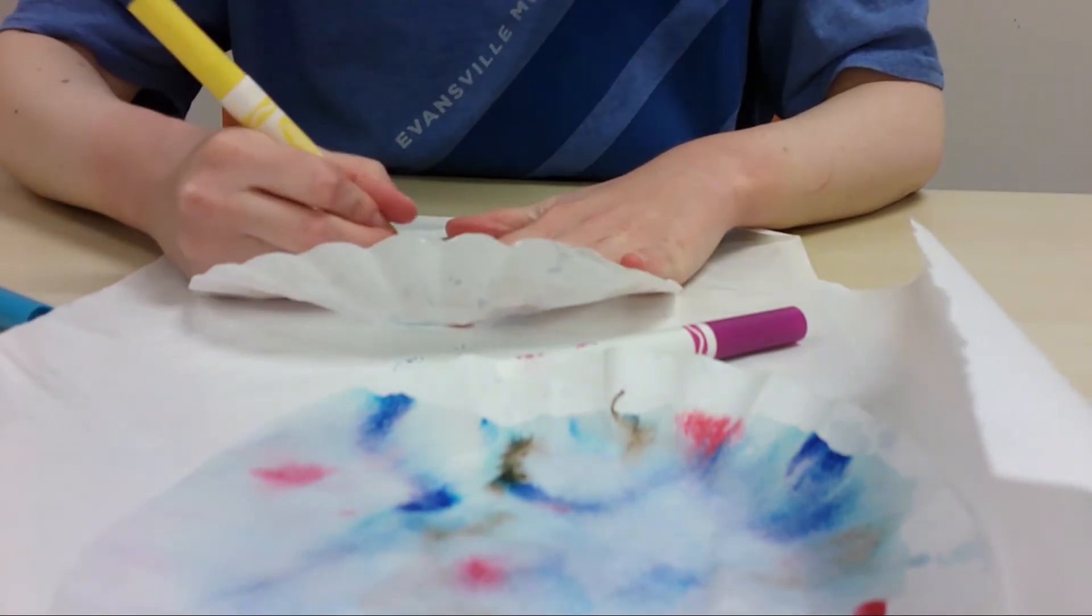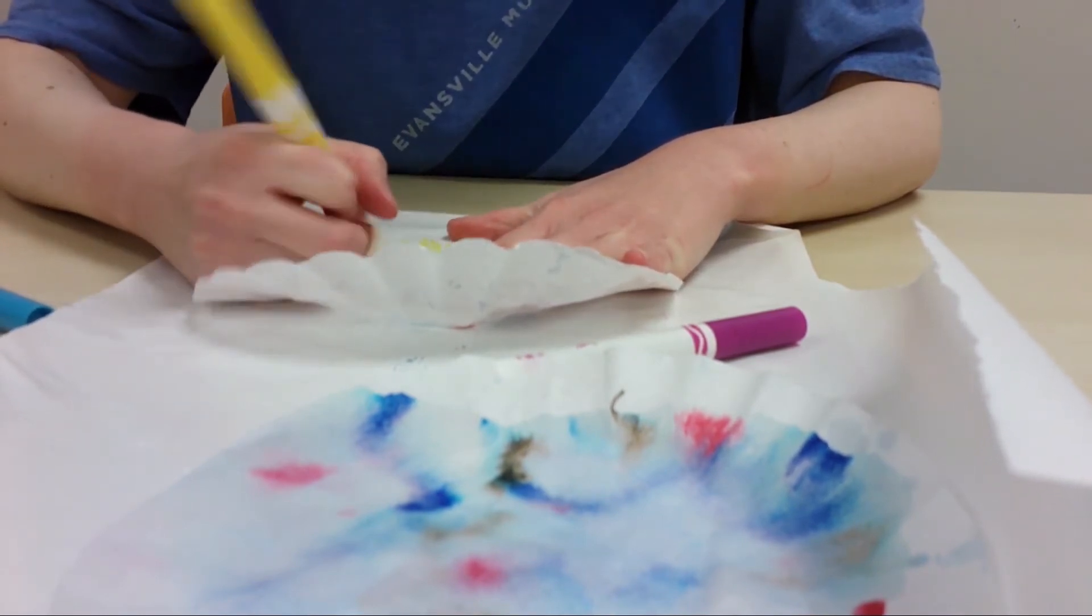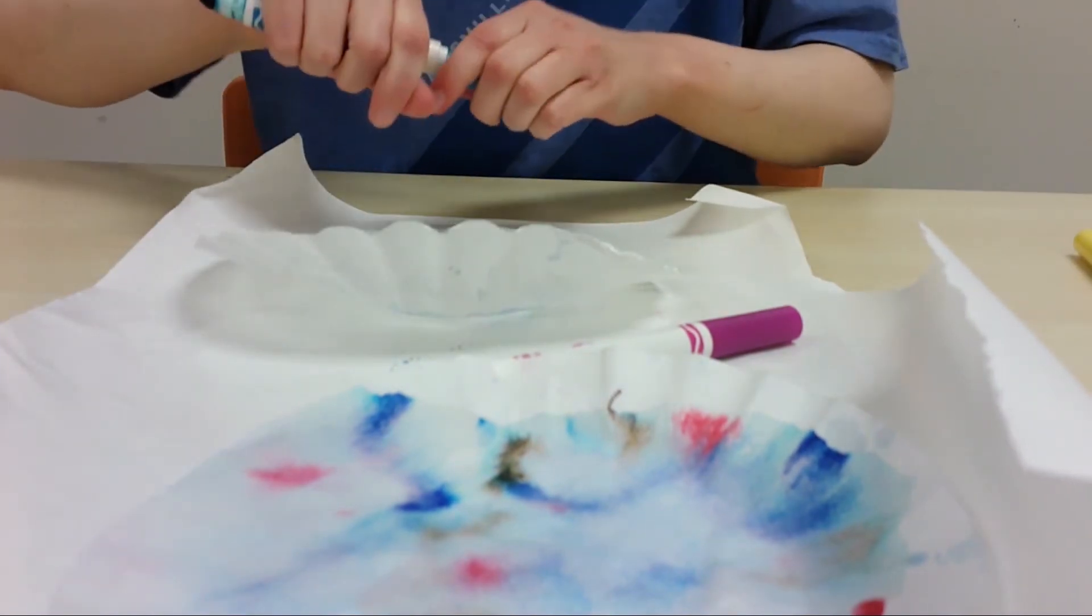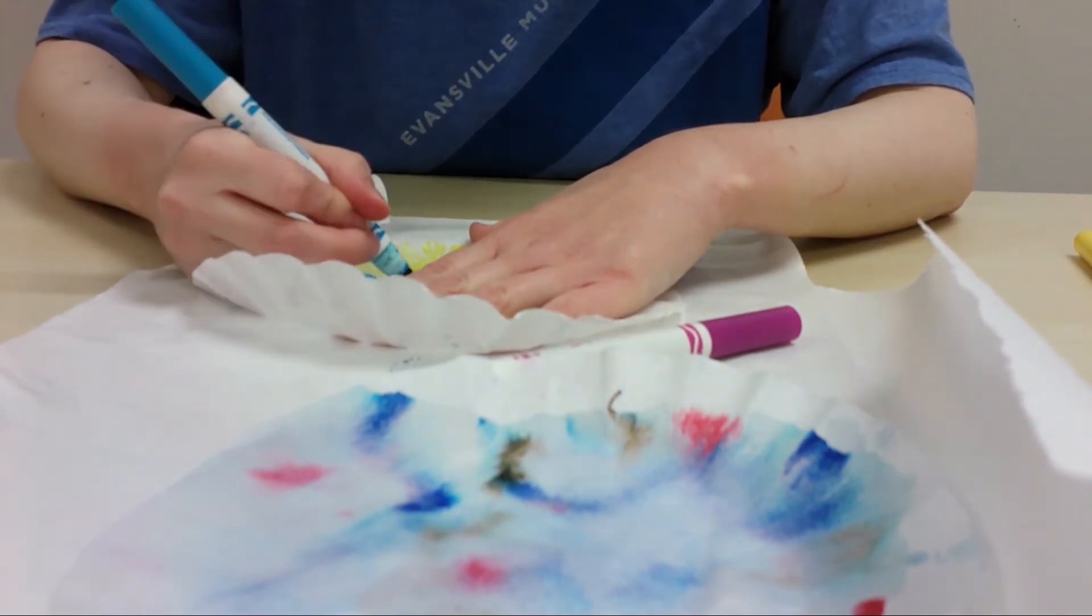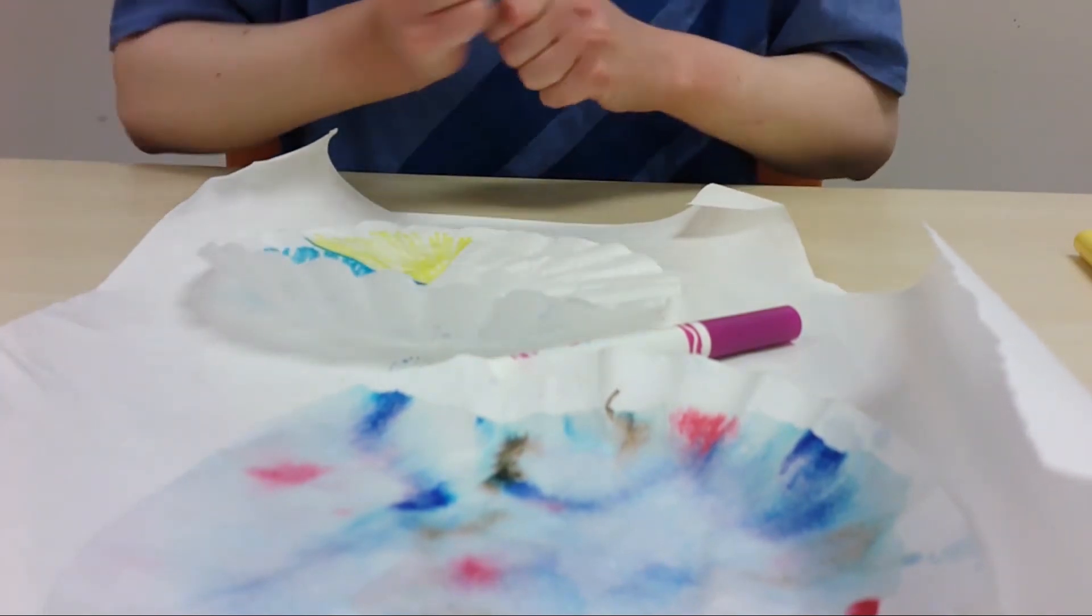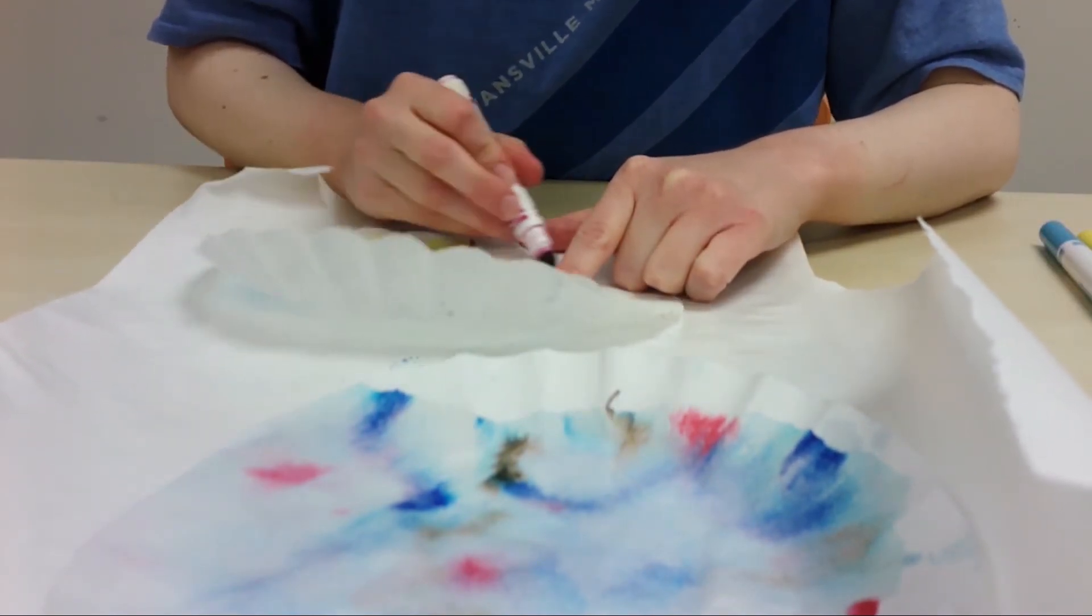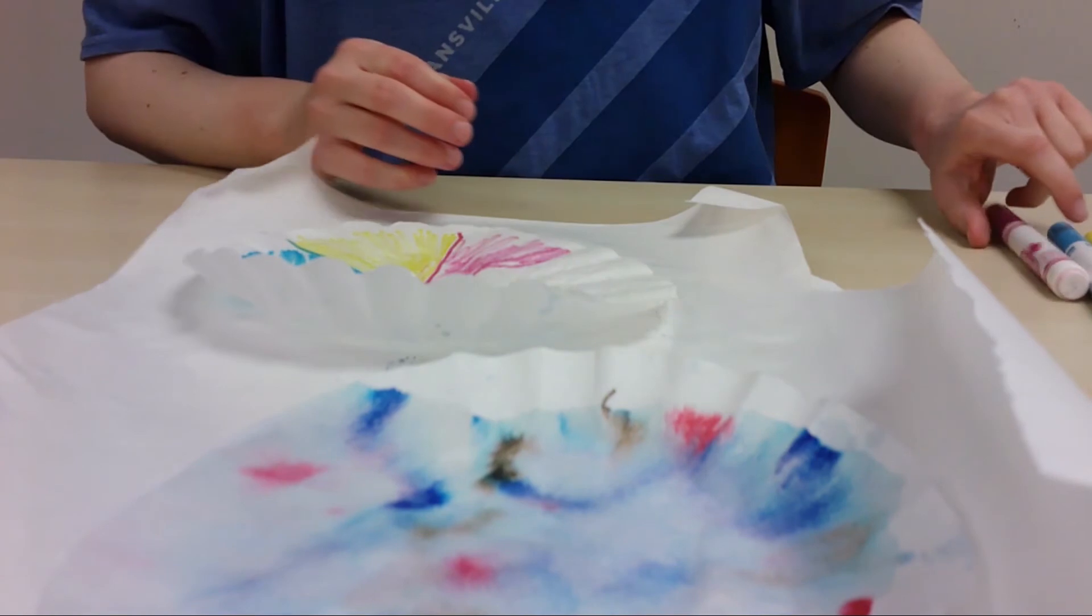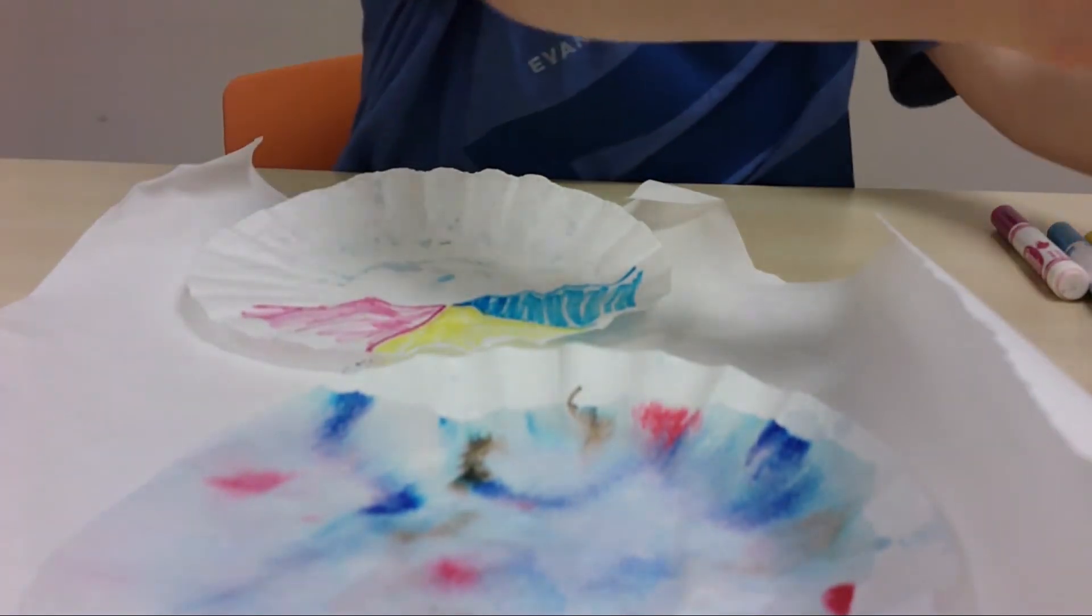So this time, I'm going to do more solid colors. I'm going to do a triangle here. I'm going to try some blue, and then some purple on this side. So it gives you a sense of what it looks like now, and we're going to add some water with our pipette.